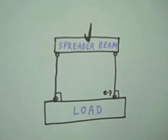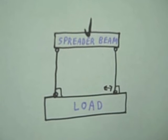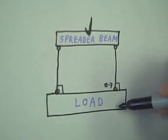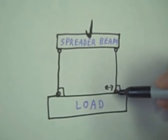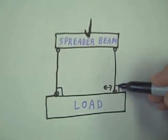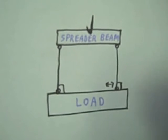The last thing we discussed is that if we properly connect a spreader beam to the load, we will eliminate all horizontal forces if this angle is 90 degrees.